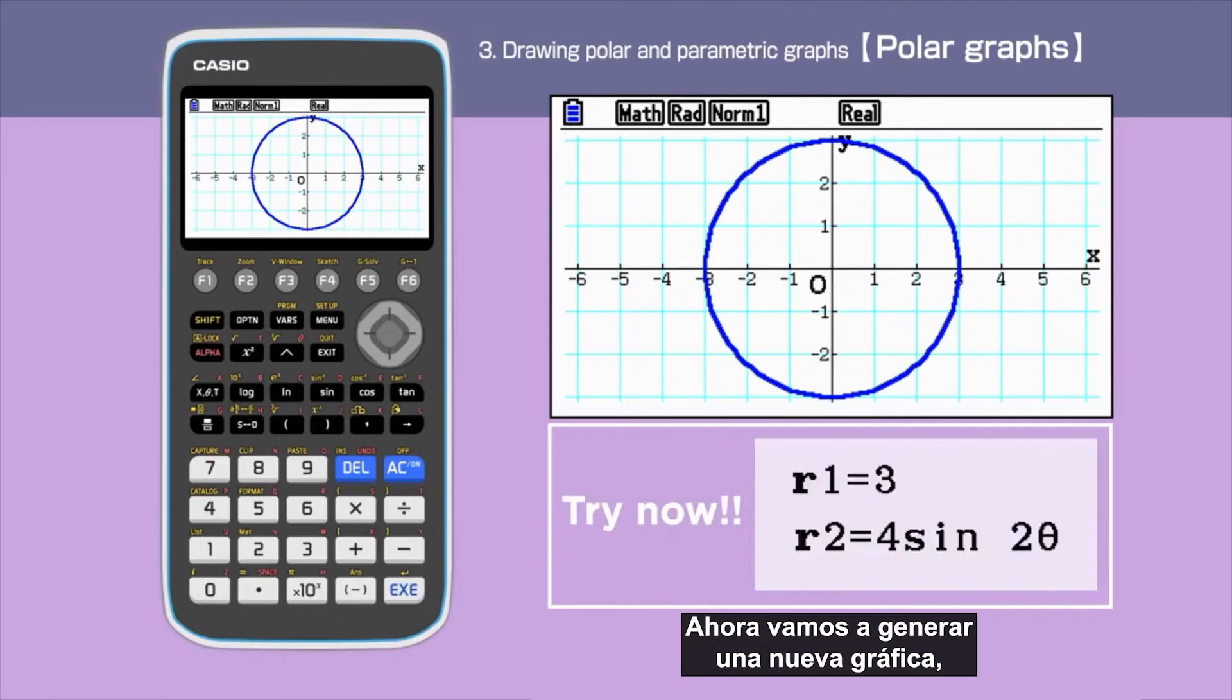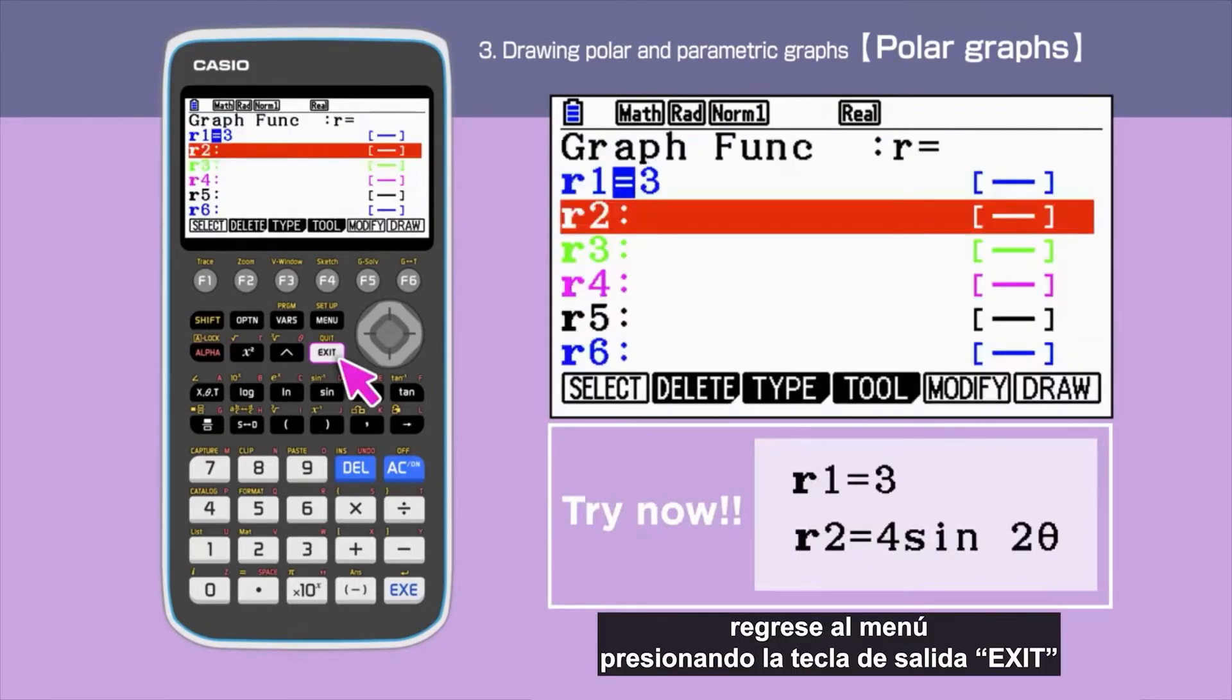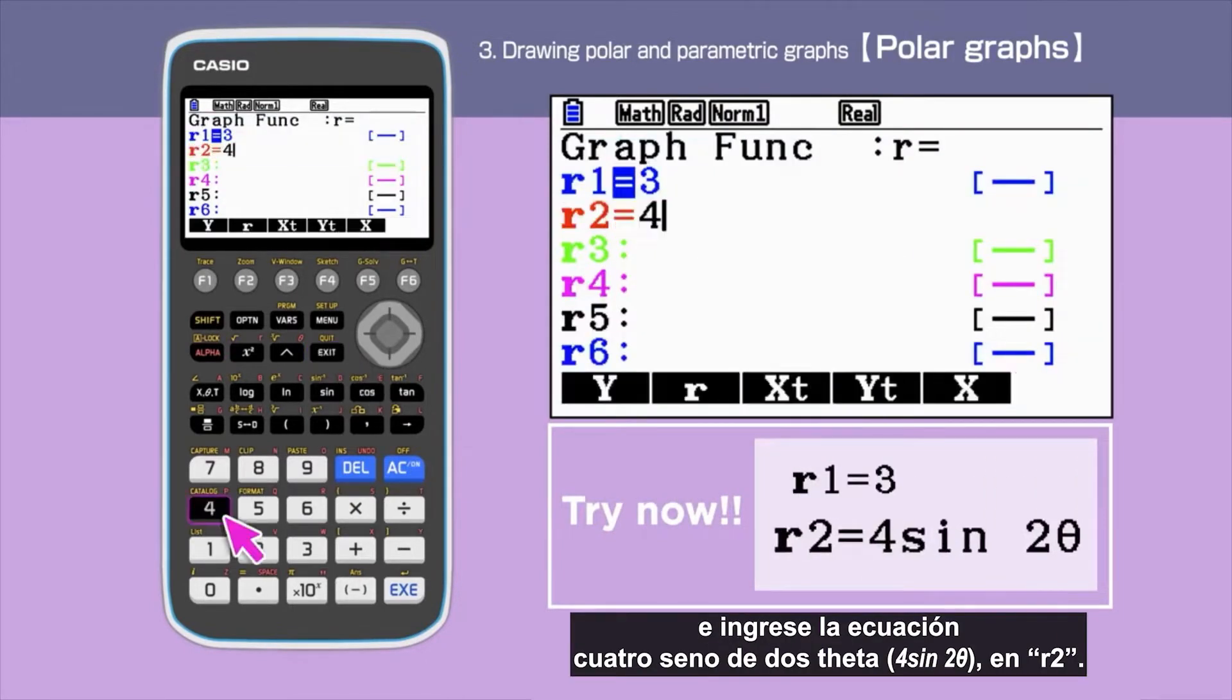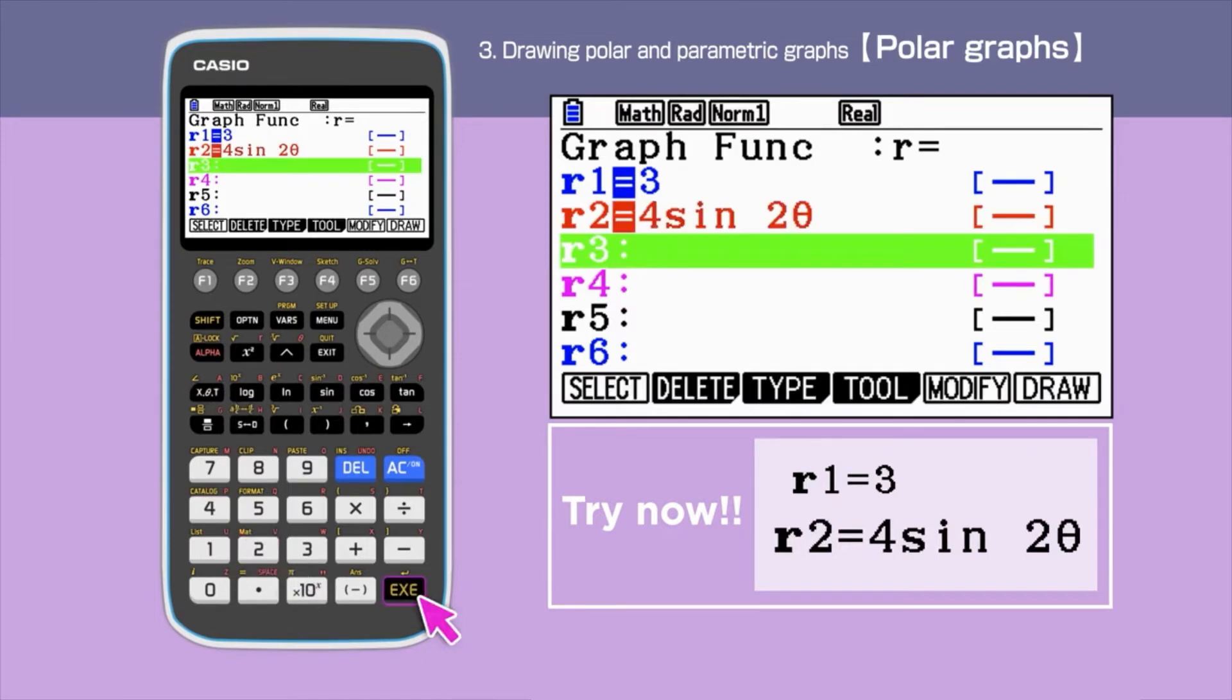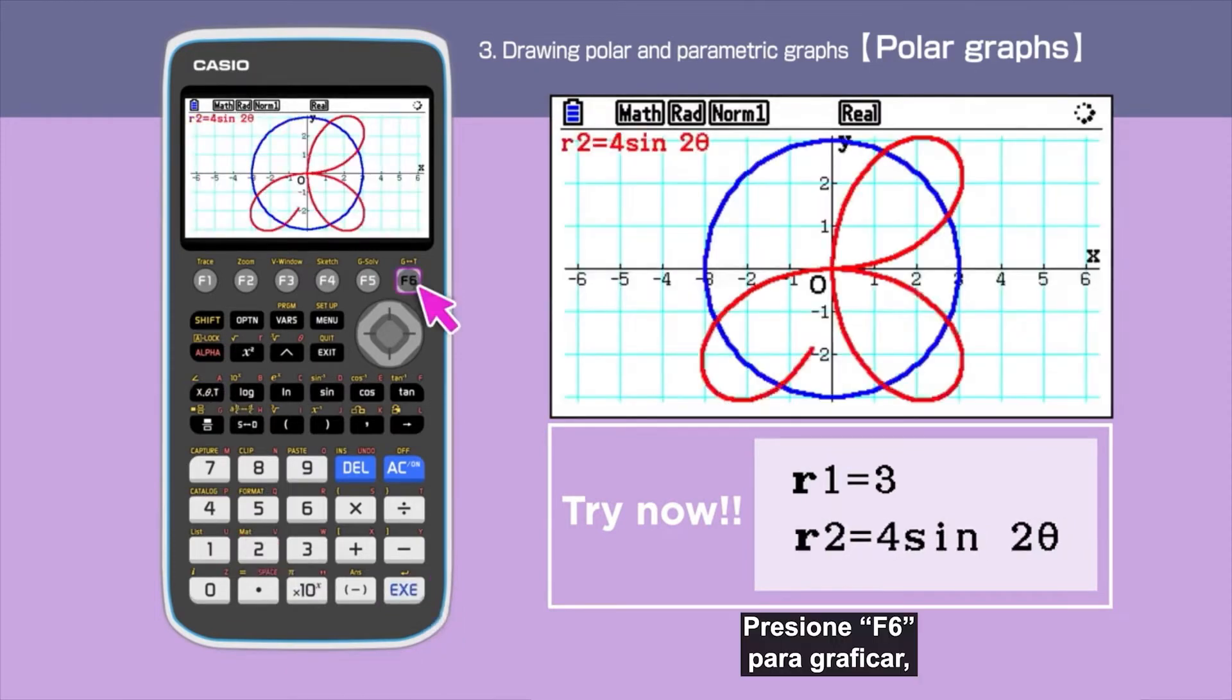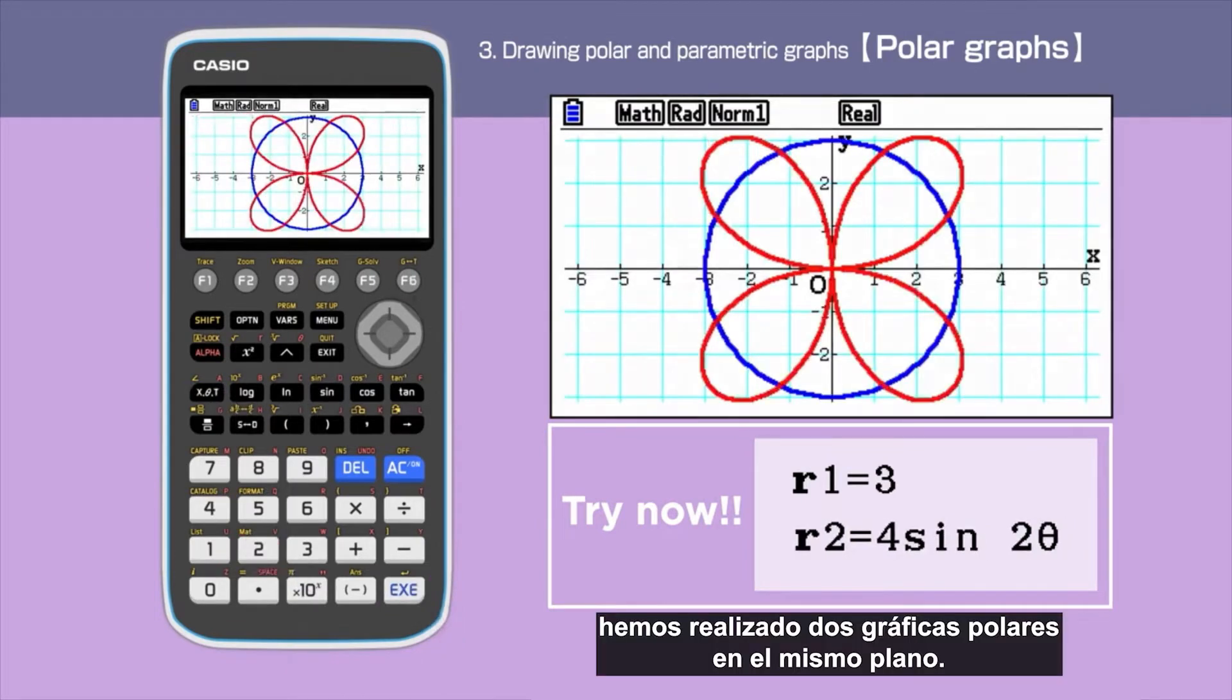We are trying a new graph next. Go back by pressing exit and enter 4sin2θ in R2. Press F6 to draw. We have drawn two polar graphs on the same axis.